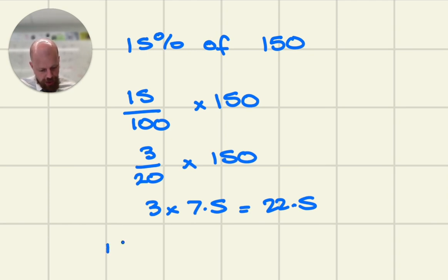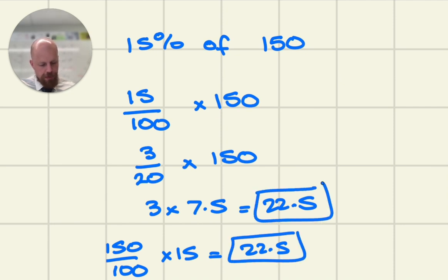Alternatively, you can do 150 out of 100, which is 1.5, times by 15, which again will give you 22.5. There's multiple different ways of finding a percentage of an amount.